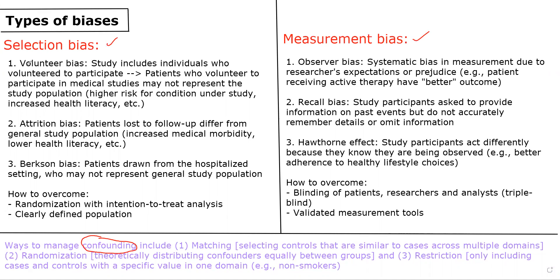For selection bias, one well-known example is volunteer bias, which is when a study sample is derived from volunteers who volunteered to participate. The problem is that patients who volunteer may not represent the actual study population of interest — for example, people with increased health literacy or people who are more interested in the condition under study. This is the definition of selection bias.